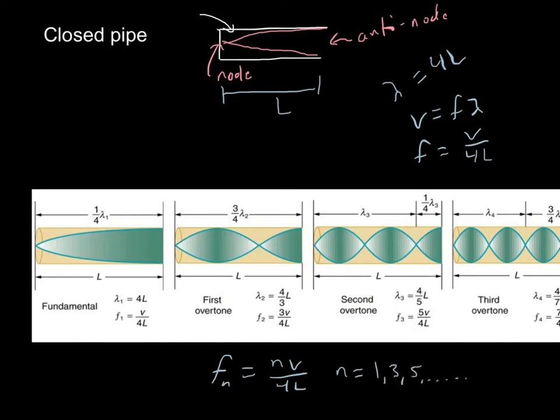So our first harmonic, which we call our fundamental, is we plug in 1, and so that's V over 4L. For our first overtone, or our second harmonic, we plug in a harmonic number of 3. So we get 3V over 4L, 5V over 4L, 7V over 4L, and so on and so forth.